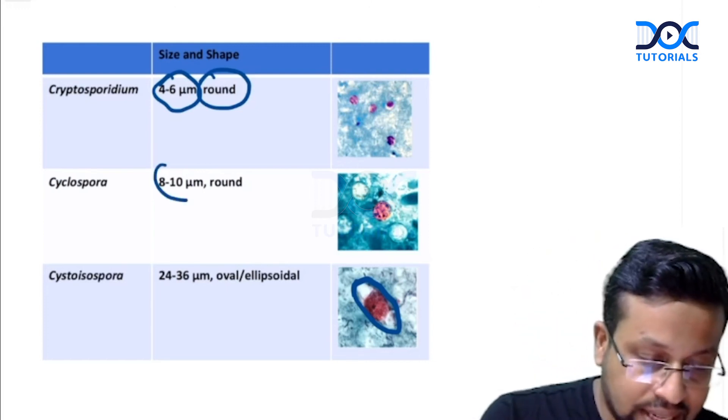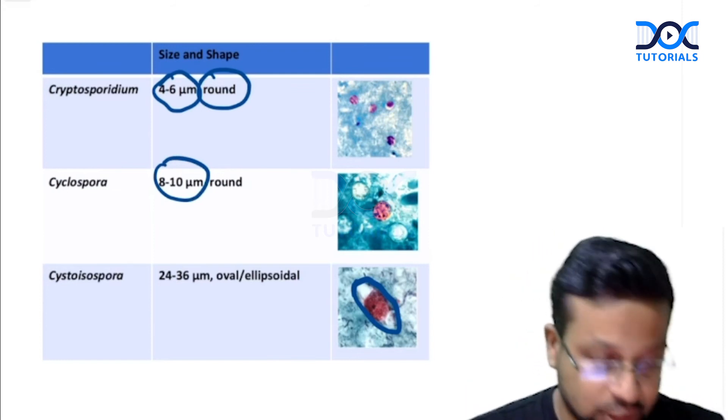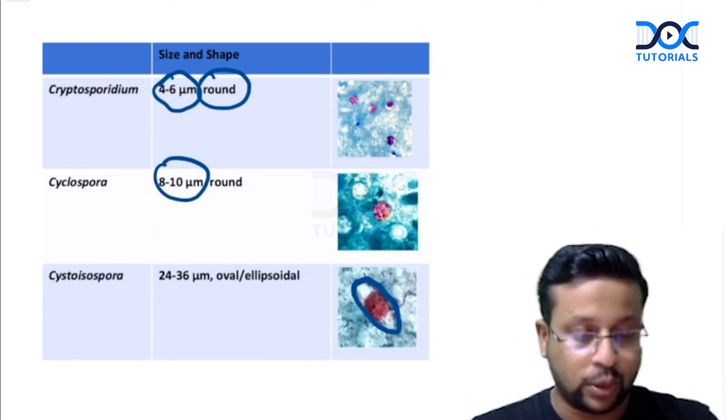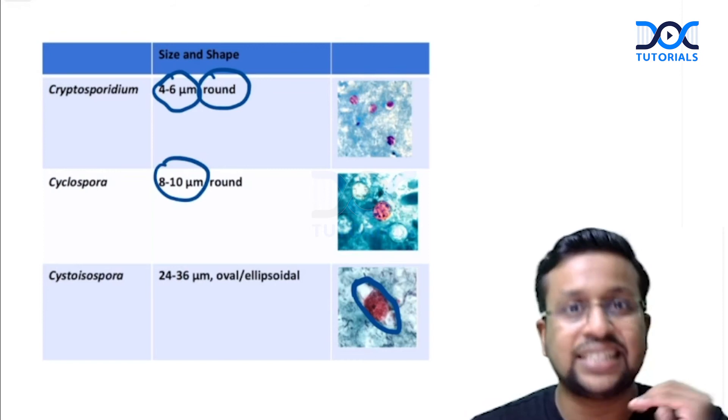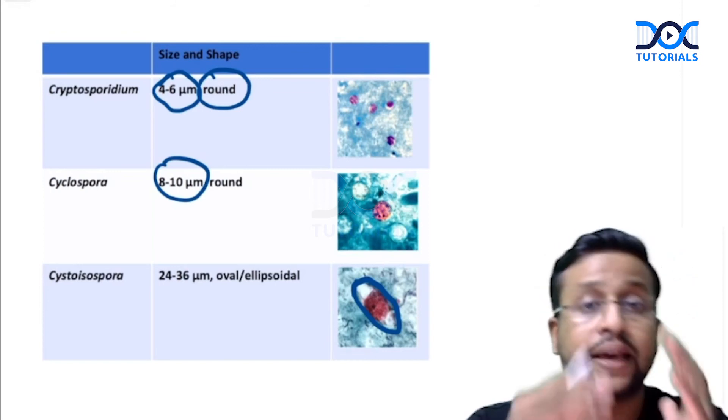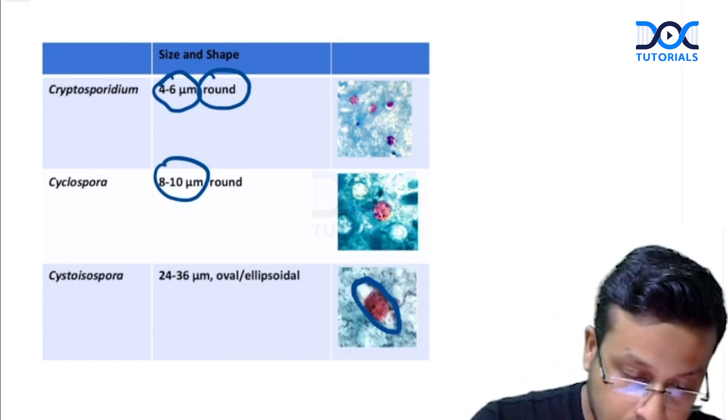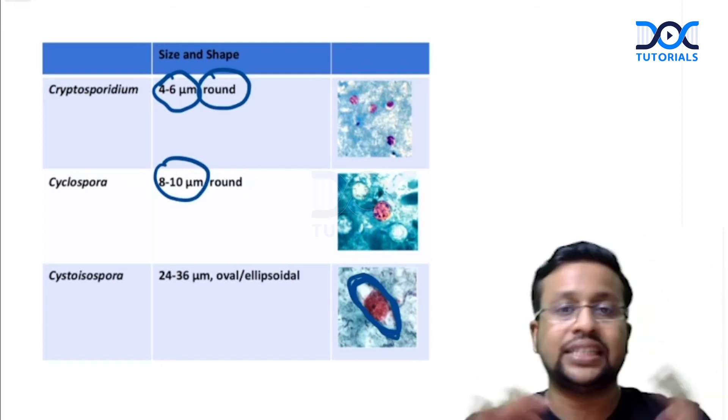For Cyclospora the size is given as 8 to 10 micrometers, again round structures. For Cystoisospora the size is 24 to 36 micrometers and they are elliptical in shape, ellipsoidal or oval in shape.